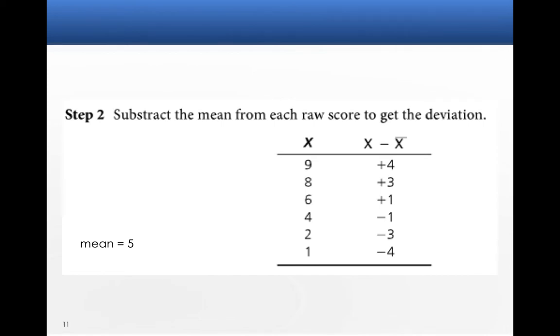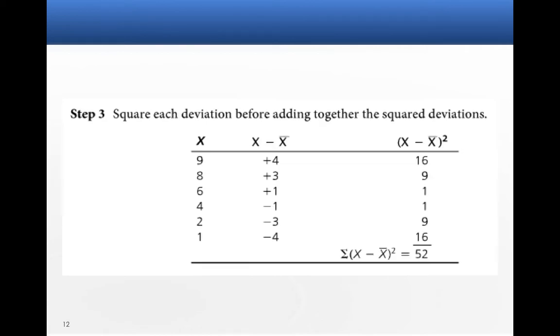Then what we're going to do is we're going to take each raw score and subtract it from the mean to get the deviation. So we're going to take X minus the mean, so 9 minus 5, 8 minus 5, 6 minus 5, 4 minus 5, 2 minus 5, and 1 minus 5. So we've got those numbers. We've got X minus X bar.